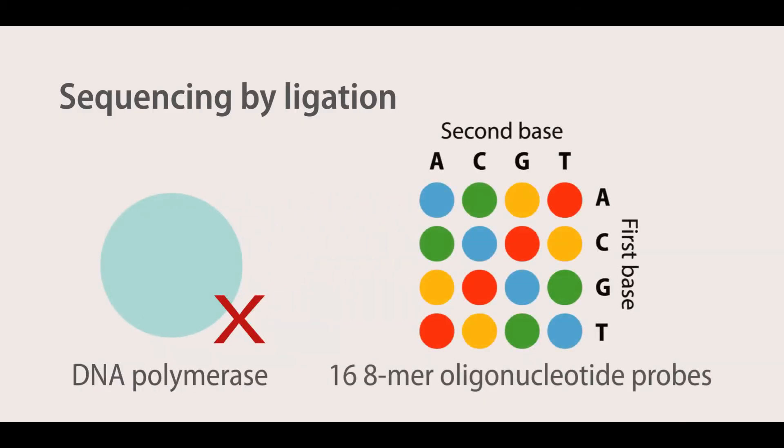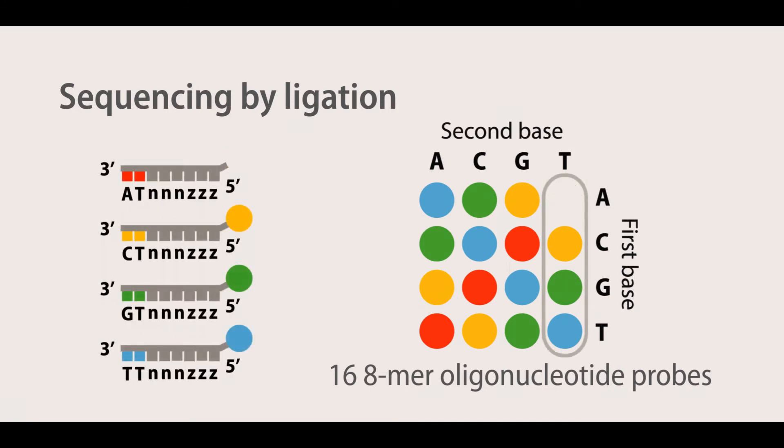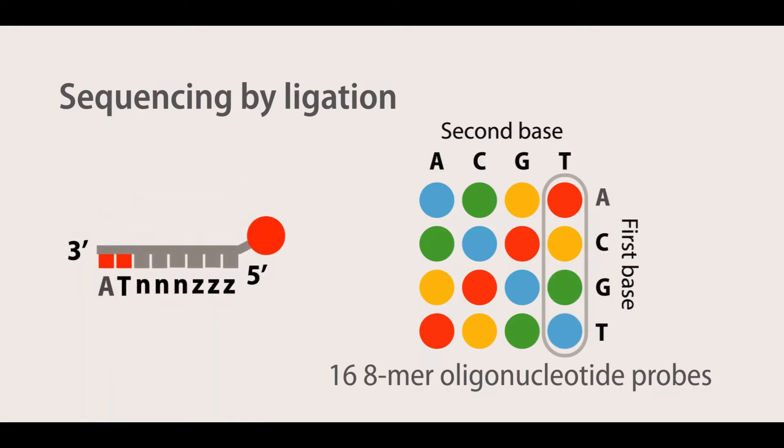Sequencing by ligation is different from the other two methods, since it does not utilize a DNA polymerase to incorporate nucleotides. Instead, it relies on 16 8-mer oligonucleotide probes, each with one of four fluorescent dyes attached to its 5' end that are ligated to one another. Each 8-mer consists of two probe-specific bases and six degenerate bases.